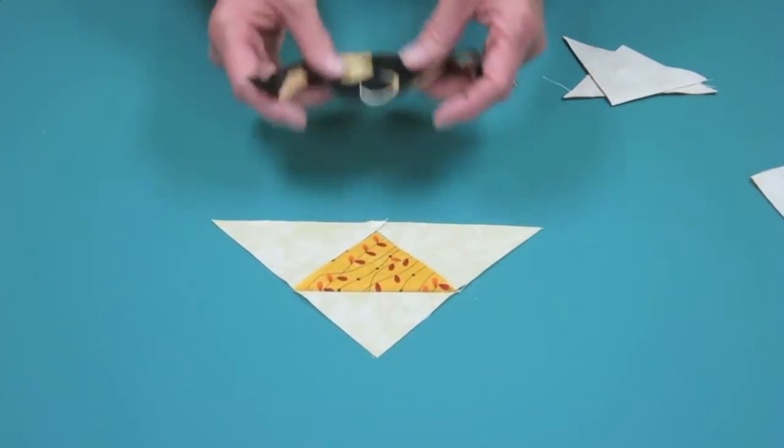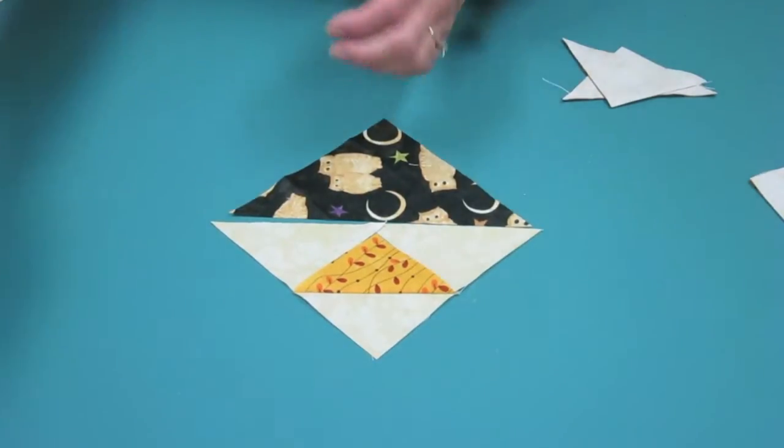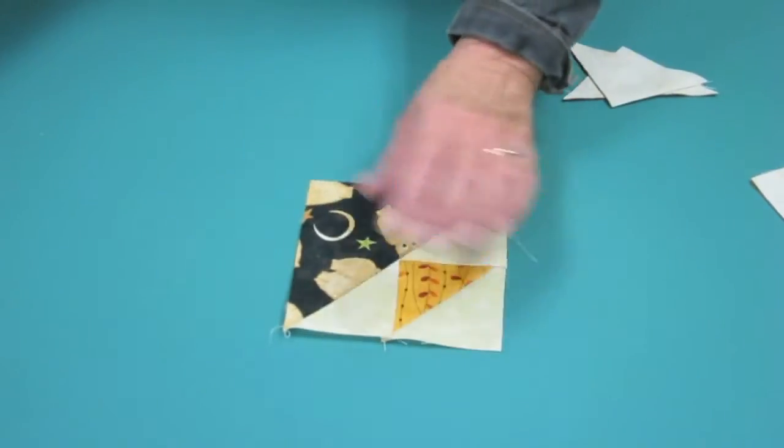And then to that, I will be sewing my dark. So I will end up with a square that looks like this.